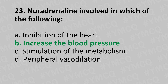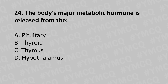Moving to our twenty-fourth question. The body's major metabolic hormone is released by the: Option A: pituitary. Option B: thyroid. Option C: thymus. Option D: hypothalamus. And the answer is Option B: thyroid.